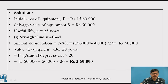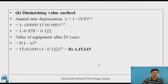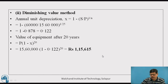Now using the diminishing value method, we first calculate the annual unit depreciation X = 1 − (S/P)^(1/N) = 1 − (60,000/15,60,000)^(1/25), which comes out to be 0.122. Therefore, the value of the equipment after 20 years can be calculated directly as P·(1−X)^20, which comes out to be rupees 1,15,615.